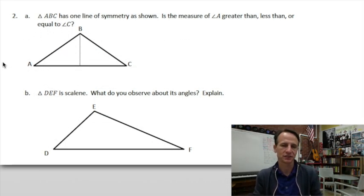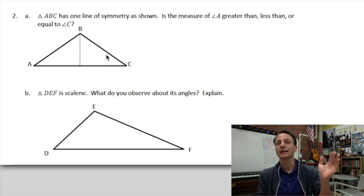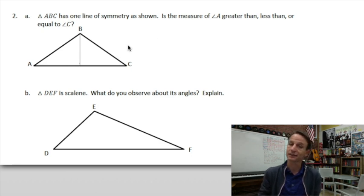Triangle ABC has one line of symmetry as shown. This line descending from point B is our line of symmetry. Is the measure of angle A greater than, less than, or equal to angle C? If this is a line of symmetry, that means angles A and C must be equal.